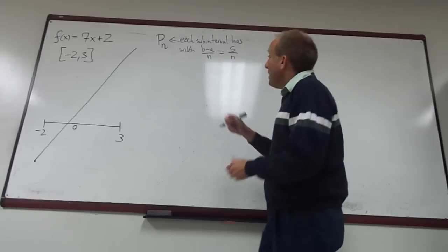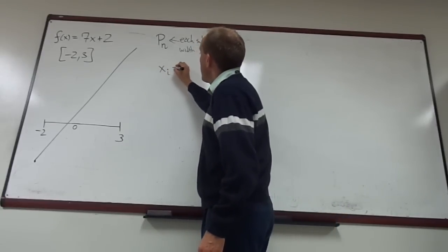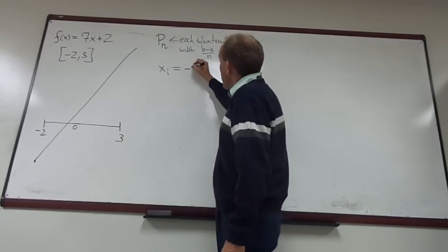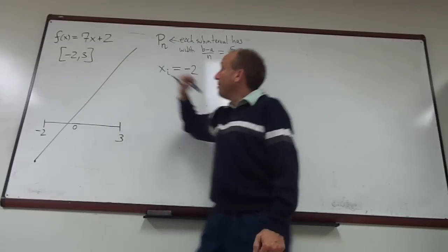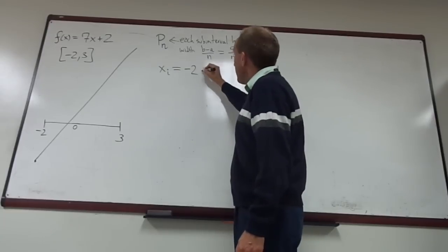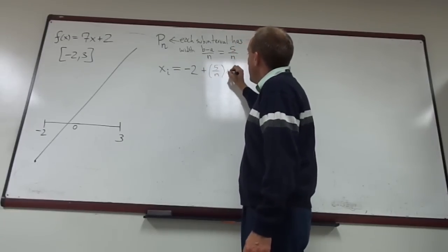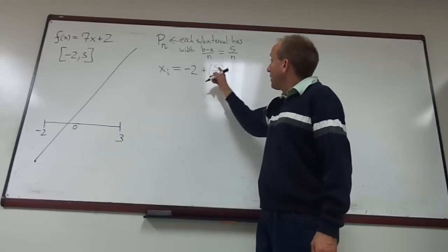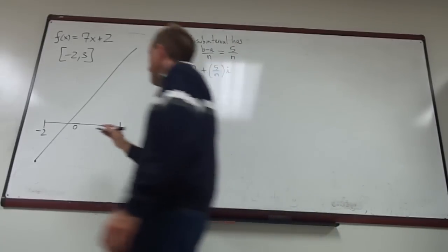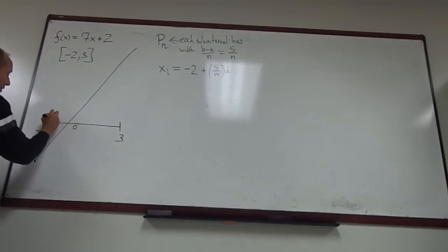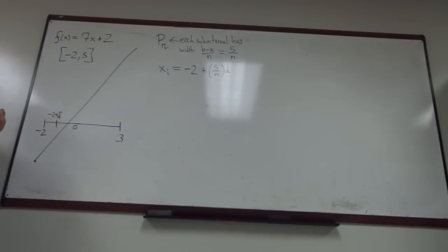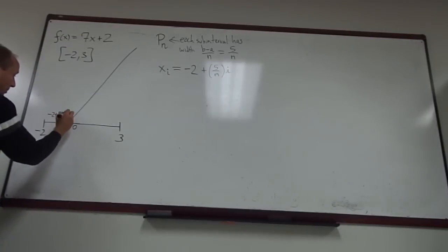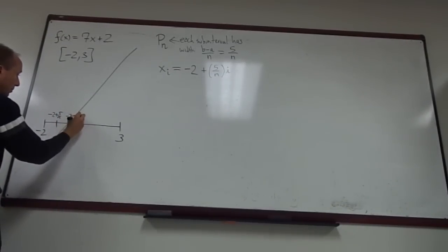The width of each subinterval is B minus A over n, and in this case of course the B minus A is 5, so this would be 5 over n. The terms of that partition, the xi's that make up the partition, can be expressed as follows. We start at negative 2, which is the leftmost endpoint of the subinterval, and we simply start moving over to the right by various multiples of 5 over n. So x1 would be at negative 2 plus 5 over n, x2 would be negative 2 plus 2 times 5 over n, and so on.